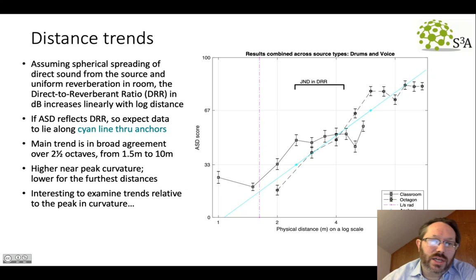Looking at the distance trends in a bit more detail, we first wanted to compare this effect against the one anticipated from the direct to reverberant ratio. In dB, this varies with log distance. So plotted out against log distance here are the results from both rooms, the classroom and the octagon hall. And I'm indicating the just notable distance in terms of DRR. The main trend agrees very well with these results over a wide range, two and a half octaves from about one and a half meters here to 10 meters. Although we do see some kind of peak curvature here in each case.